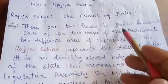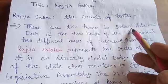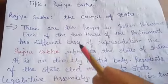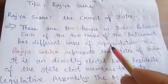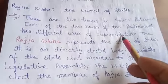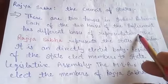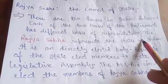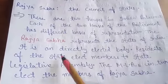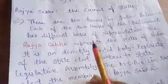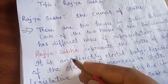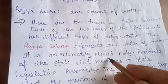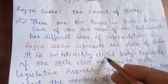There are two houses in our Indian parliament. Each of the two houses of the parliament has a different basis of representation. Now, talking about Rajya Sabha — the Rajya Sabha represents the states of India. It is an indirectly elected body. Common people do not vote directly for the members of Rajya Sabha.